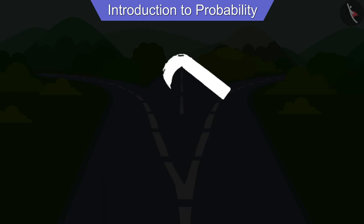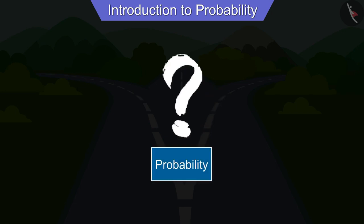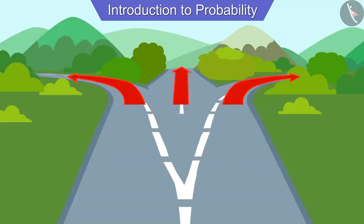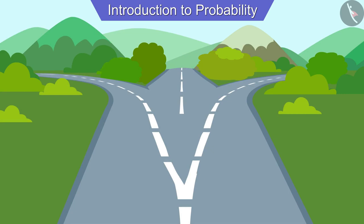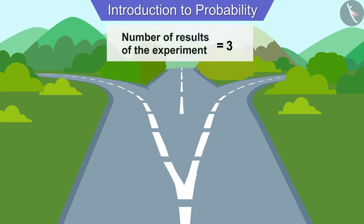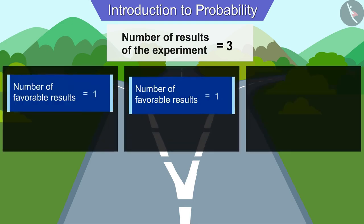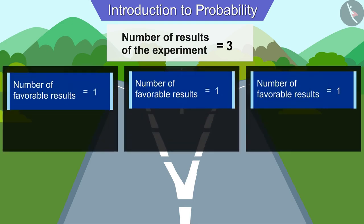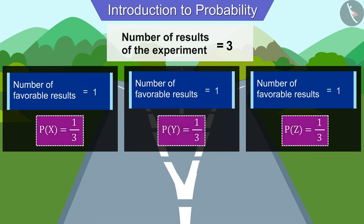If we had three roads here instead of two, can you tell us the probability for them? When there are three roads, the total number of possible outcomes becomes three, and as before, the number of favorable results for each road will be one. Therefore the probability of each being correct for the three roads will be one third.